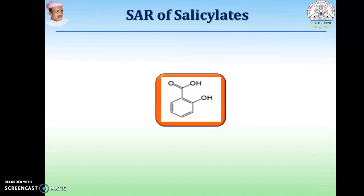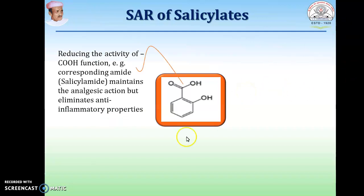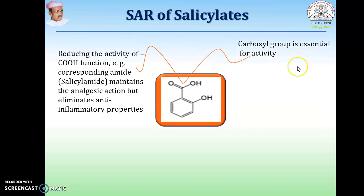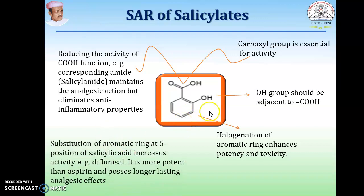Salicylates are formed from salicylic acid by esterification. In the SAR of salicylates, the COOH group is essential for activity. If you reduce it to an amide, it retains analgesic action but eliminates anti-inflammatory properties. This COOH group should be adjacent to the hydroxyl group for maximum activity. Halogenation of the ring enhances potency. Substitution of an aromatic ring at the 5-position of salicylic acid increases activity — example: diflunisal.